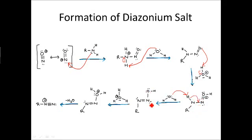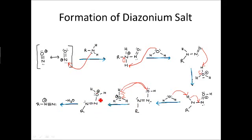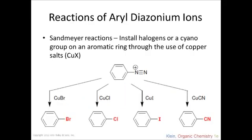Then the oxygen located on top of the nitrogen is protonated by a hydronium ion. This is very important because it forms a good leaving group. In the next step, once the water leaves, it causes the formation of the third bond between the nitrogens, forming the diazonium ion.